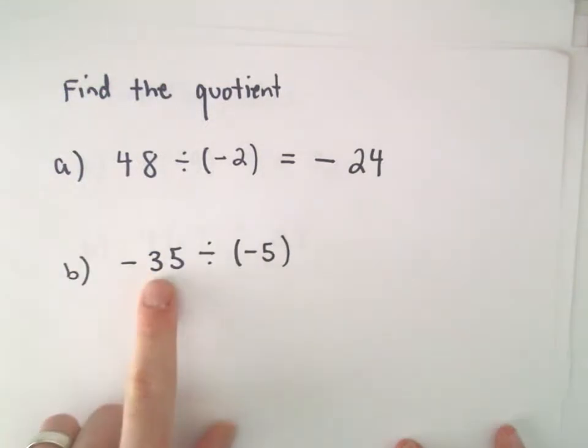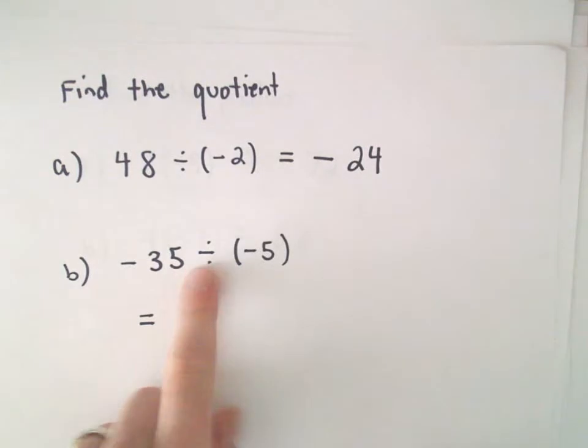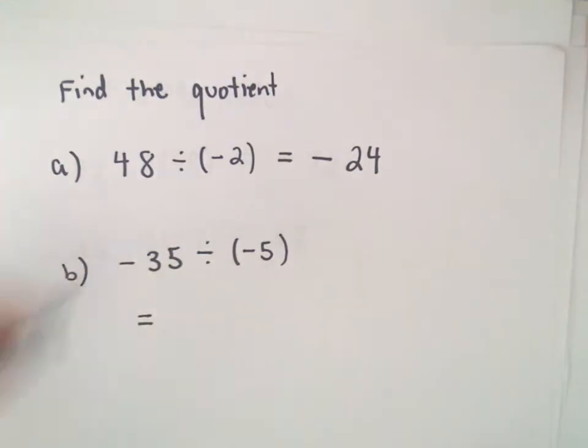So, let's see. Part B, we've got a negative divided by a negative. It's the same rule as with multiplication. A negative times a negative is a positive. Likewise, a negative divided by a negative is a positive. So, it's definitely going to be a positive number.